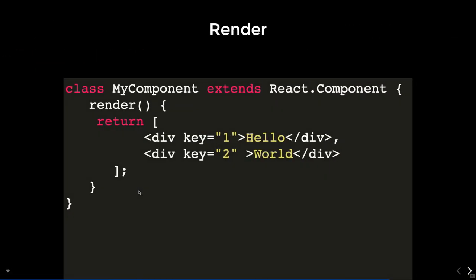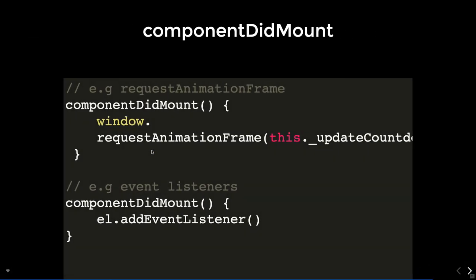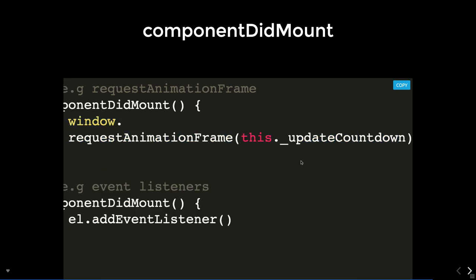The render method remains the same — it is the ES6 class render function that renders your data. You can render it in an array or wrap content with empty fragments. After render, componentDidMount is executed. This is part of the mounting lifecycle: constructor → render → componentDidMount. In componentDidMount, you can interact with the DOM, update state, or make API calls.